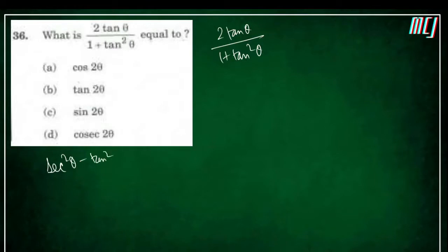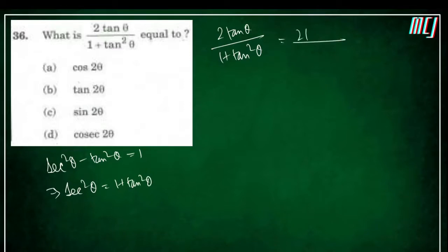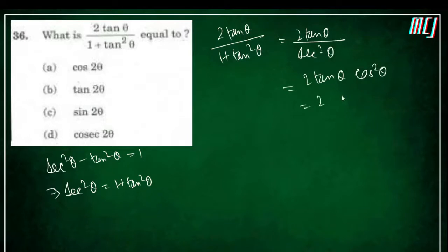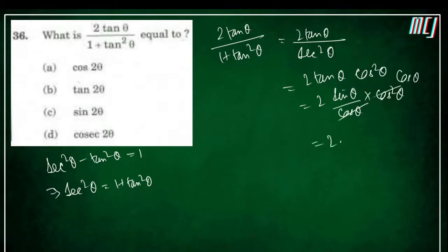From the identity, sec²θ = 1 + tan²θ. So (1 + tan²θ) becomes sec²θ, and 1 upon sec²θ means cos²θ. Now tanθ means sinθ/cosθ, multiplied by cos²θ — one cosθ cancels — giving us 2sinθcosθ.